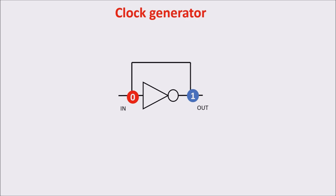But because of the feedback, the one immediately comes back to the input changing the output to zero, which immediately comes back again and so on. So, the positive feedback makes this inverter unstable and continuously changing between zero and one, which is what we are looking for.